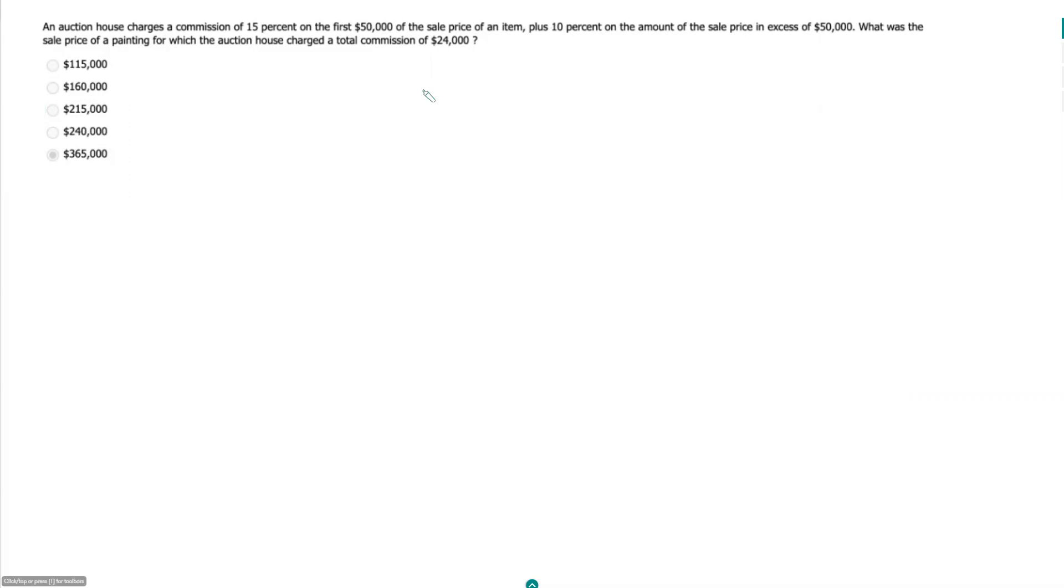So let's just find a generic equation to start. We got our total commission, and that is equal to 15% of the first $50,000, and then we add to that 10% on everything else, on the part greater than $50,000.